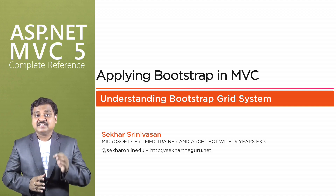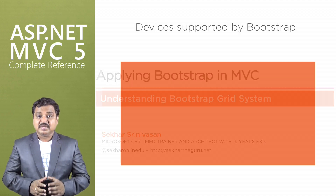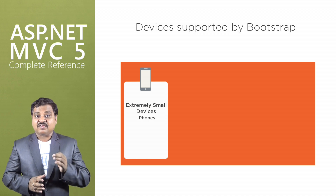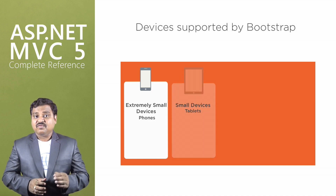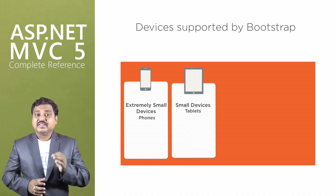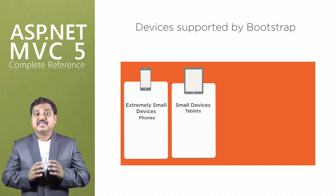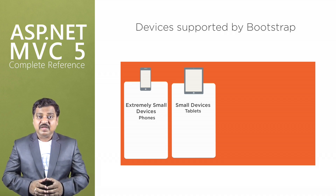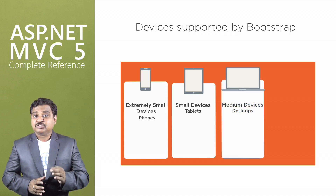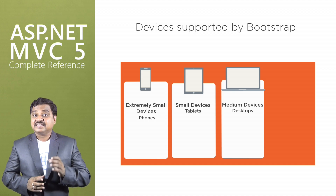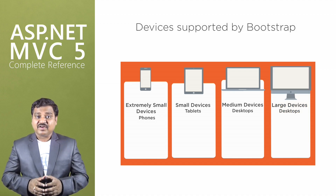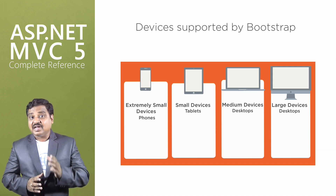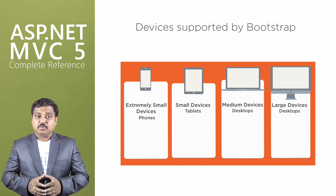Bootstrap categorizes devices into four types. The first is extremely small devices like phones or mobiles with a pixel size less than 786. The second is small devices such as tablets with a size greater than 786 pixels. The third is medium devices such as small desktops having a size less than 992 pixels. And the fourth is large devices — desktops with a large screen size of 1200 pixels or above.